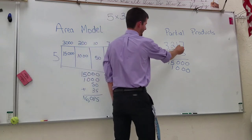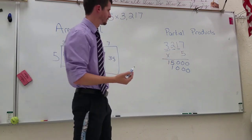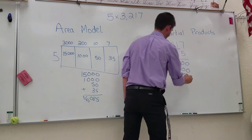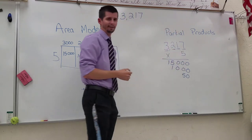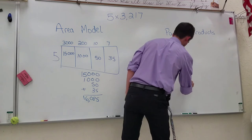So then I'm going to take and multiply it by the tens, so 5 times 10 would be 50, and then 5 multiplied by the 7 would be 35.